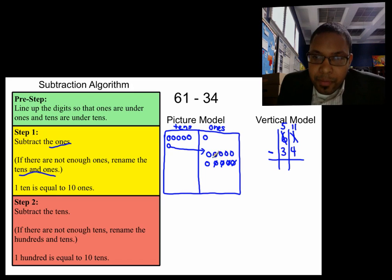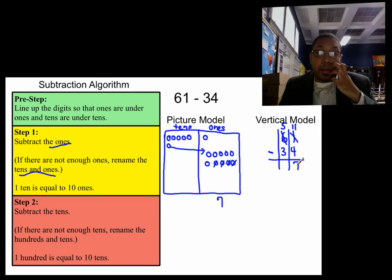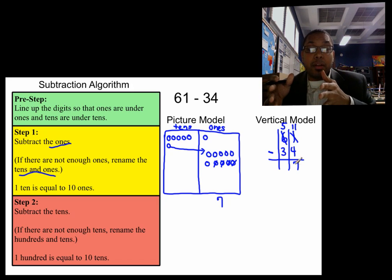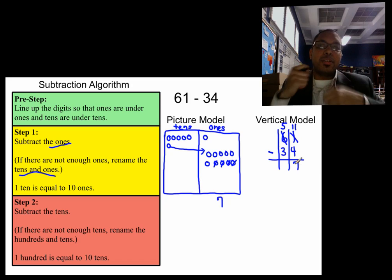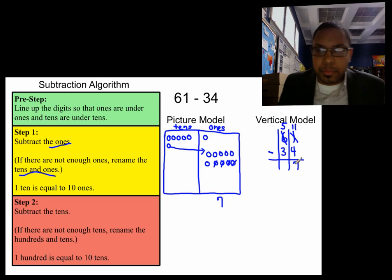How many ones do we have left? Well, we have five, six, seven ones. So we have seven ones left, and that's what the other part will be. So we put a seven ones here and also a seven ones in the vertical model. Basically, this picture model is just the same thing as the vertical model. I'm just using pictures to help you to understand.